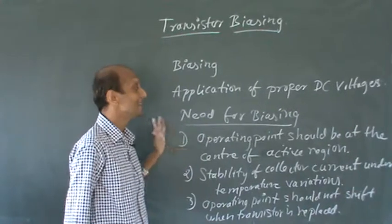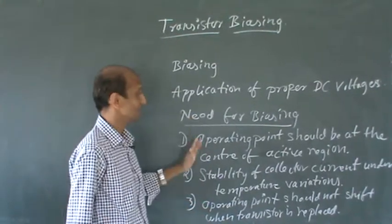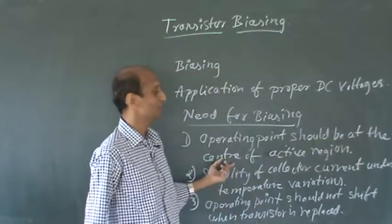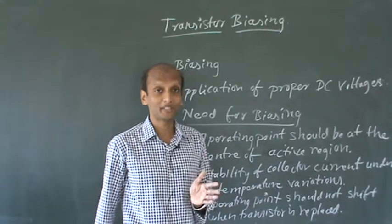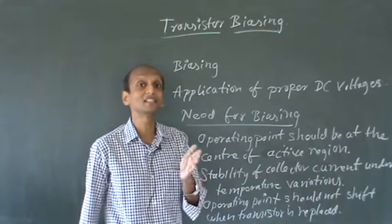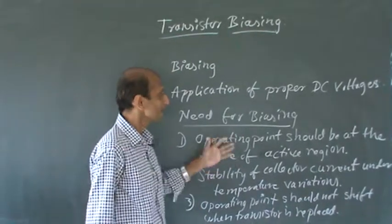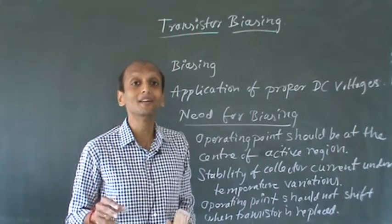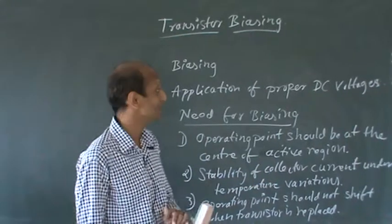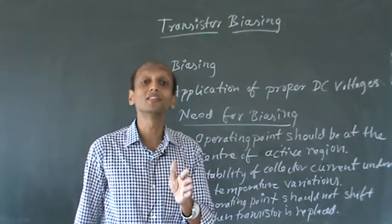There are three points for the need for biasing. The first point is: the operating point should be at the center of the active region. We have learned about the active region from our previous chapter, where we saw the different regions in the characteristics graph. The operating point is the point in your transistor characteristics where you observe the performance of the device — it is the point where the transistor is getting operated, also called the Q-point.